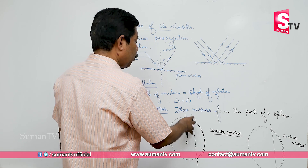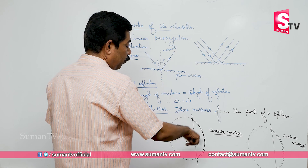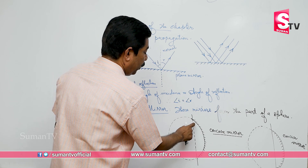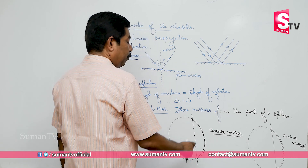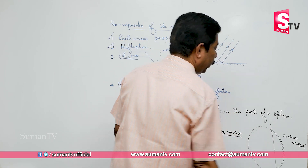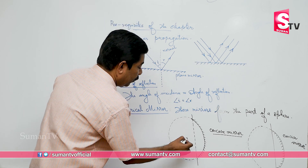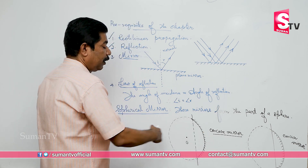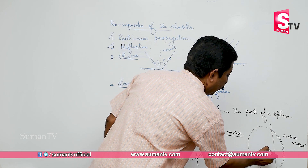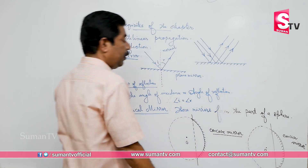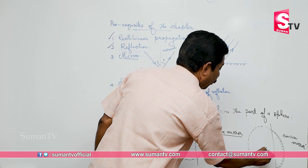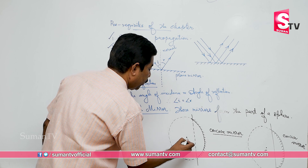Spherical mirrors form part of an imaginary sphere from which the mirror is cut. If the inner surface is the reflecting surface, that is concave. If the outer surface is the reflecting surface, that is a convex mirror. There will be a center for that sphere, and that center is known as the center of curvature, usually denoted by O or C.